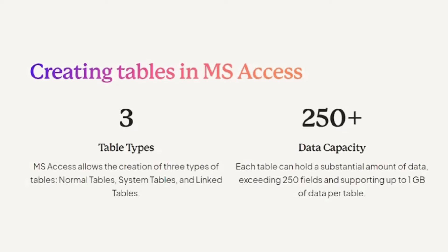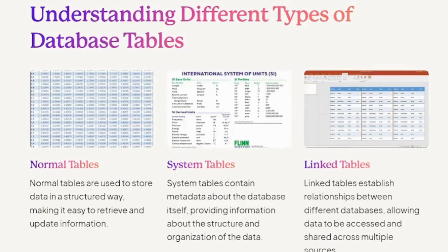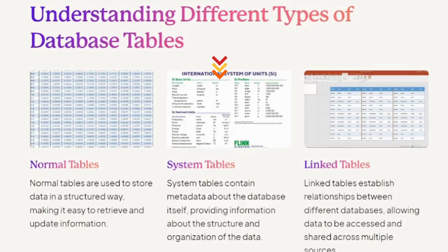Understanding different types of database tables. Normal Tables are used to store data in a structured way, making it easy to retrieve and update information. System Tables contain metadata about the database itself, providing information about the structure and organization of the data. Link Tables establish relationships between different databases, allowing data to be accessed and shared across multiple sources.